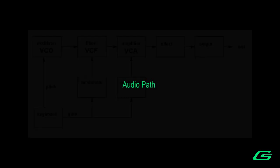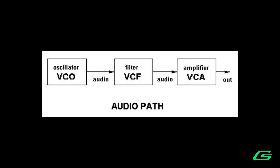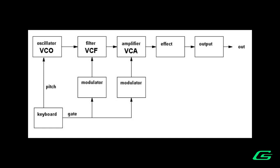VCOs, VCFs, and VCAs are all shown at the top of the chart because they are in the audio path. Oscillators generate the sound, filters can remove frequency-dependent portions of the sound, and amplifiers can change the loudness. The patches connecting audio path modules are usually indicated by horizontal lines. Down below on the chart we see modulators. While modulators can have several different types, their purpose is generally the same: to modulate other functional blocks of the audio path.